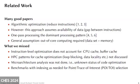While doing research and development for SCAR, we found many good papers out there focused on algorithmic optimizations to reduce instructions. However, this approach assumes the availability of the data and does not account for the gap between instructions demonstrated earlier. They also focused heavily on one-pass processing, giving the general assumption that out-of-core computing is a requirement. What we found missing is that instruction-level optimizations do not account for the CPU or buffer cache. High-performance computing patterns for cache optimizations such as loop-blocking and data locality were not discussed.